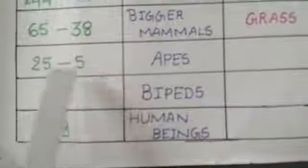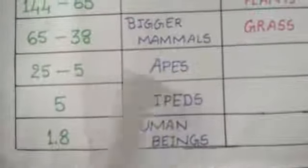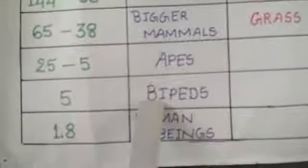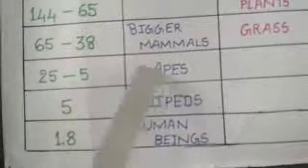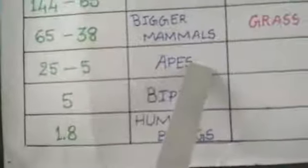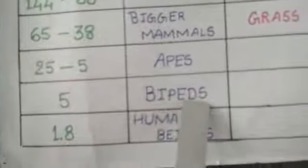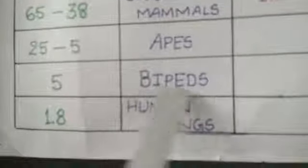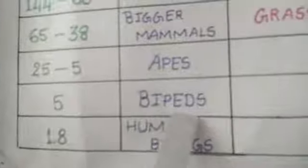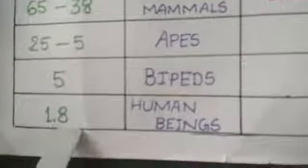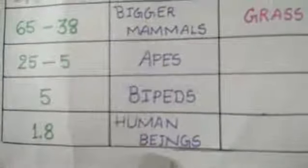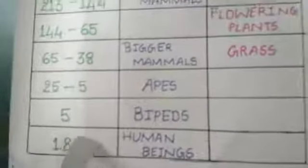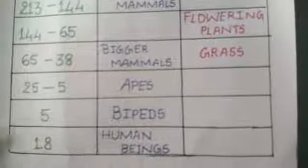In the 5 million years ago, these apes developed as bipeds. Apes use all four limbs for walking, but bipeds means two are used as legs and two as hands. They are called bipeds. Next, 1.8 million years ago, human beings started. Human beings developed from the bipeds. I will attach a chart to this video showing how man came from the apes — watch it.